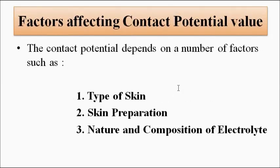The factors which affect the contact potential are: the type or nature of the skin — whether it is dry or moist, and whatever other skin properties exist best known to medical professionals. Then there is skin preparation — how the skin is prepared for measurement before the measurement is done, and how the electrode is placed. The other factor is the electrolyte or electrode paste or jelly used to achieve adhesion. These are the factors that affect the contact potential value.